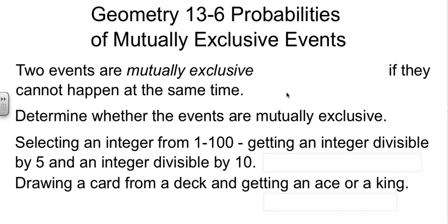Suppose I'm going to select an integer from 1 to 100. Is it mutually exclusive to get a number divisible by 5 and a number divisible by 10? That is to say, are any numbers in there divisible by both 5 and 10? Sure there are. 10 is divisible by both, 20 is divisible by both, 30, 40, 50, all the way up. So this situation is not mutually exclusive.